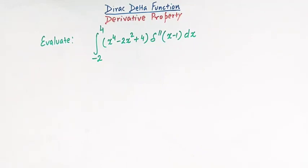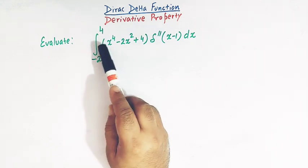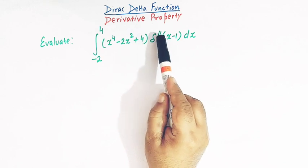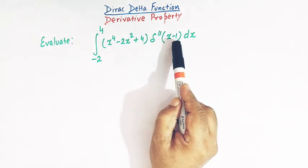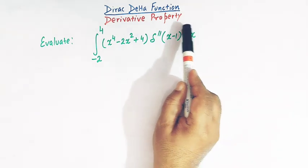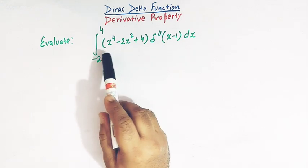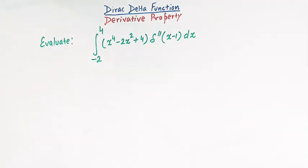Hello viewers. In today's class we are going to discuss one important integral involving the derivative of the Dirac delta function. We have to evaluate this integral from minus 2 to 4 with x raised to 4 minus 2x squared plus 4, multiplied by the second derivative of the Dirac delta function, delta double prime of x minus 1, dx. We'll see how to use the derivative property of the Dirac delta function to evaluate these types of integrals.